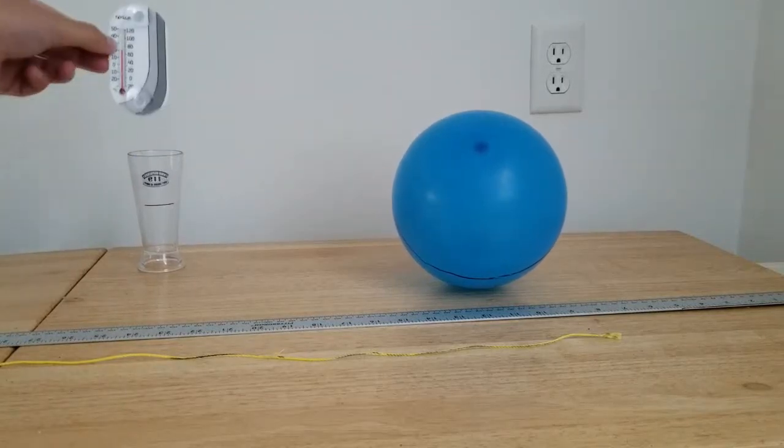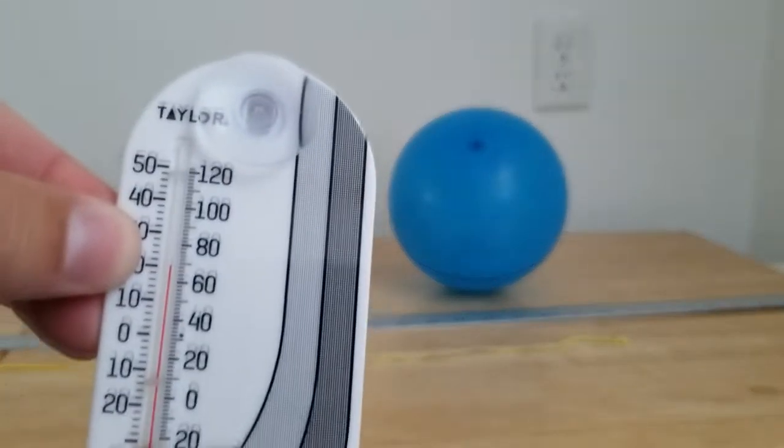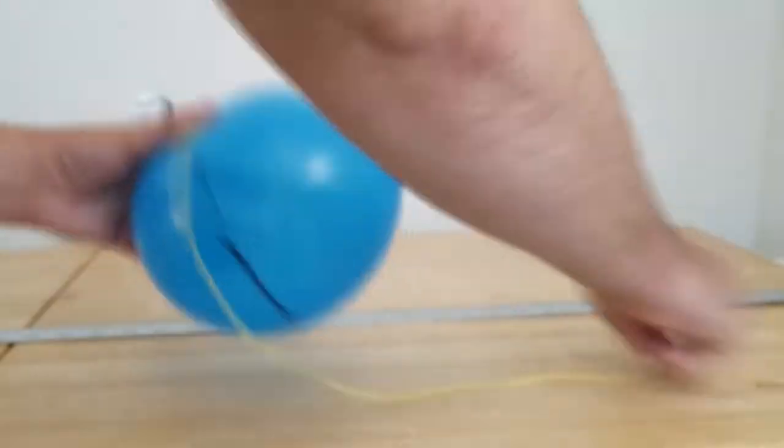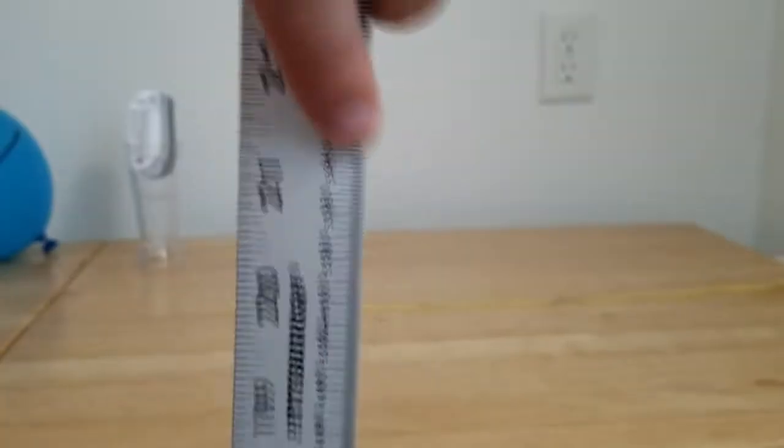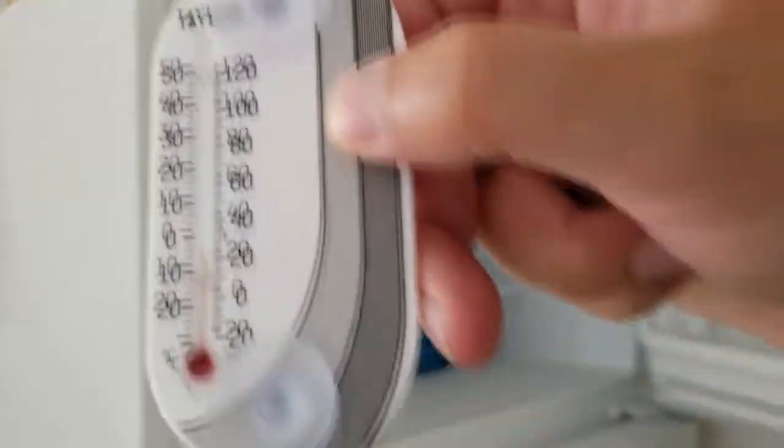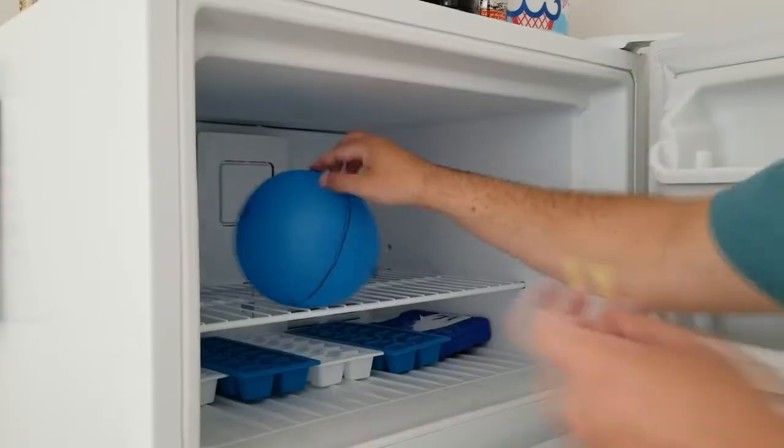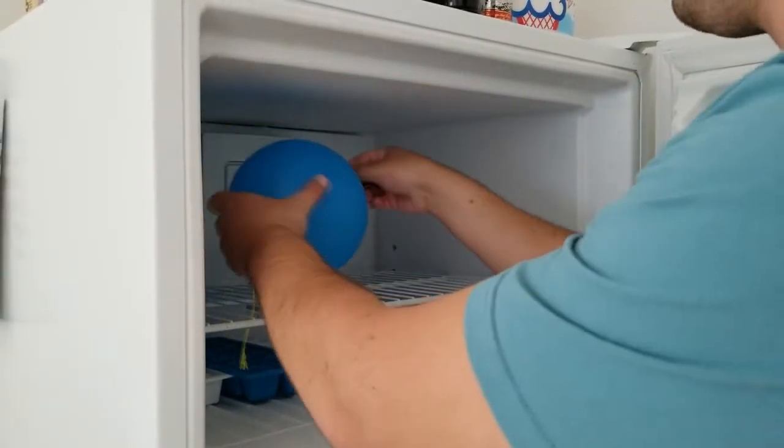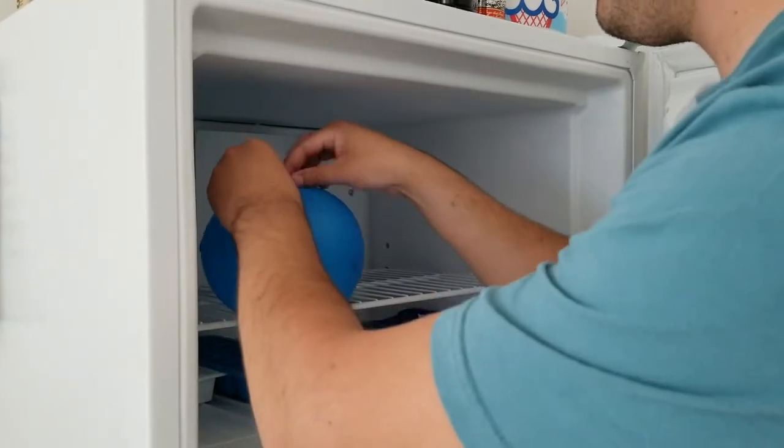In this problem, we have a balloon at room temperature of 21 degrees Celsius. It has an initial circumference of 0.54 meters. We place the balloon in a fridge at negative 5 degrees Celsius for one hour. Will the balloon's volume or circumference increase, decrease, or stay the same?